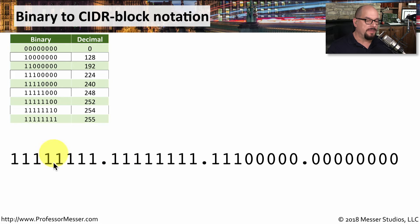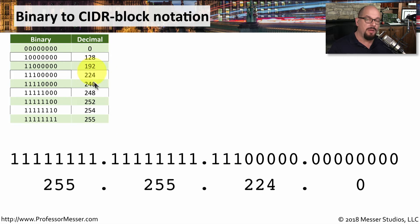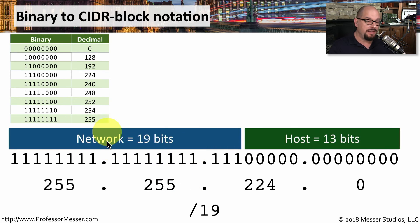Let's use our chart to perform the same calculation with this subnet mask. In binary, it's all ones in the first octet, all ones in the second octet, and three ones in the third octet. We know that all ones is going to be 255, and three ones with the rest zero would be 224, making the subnet mask 255.255.224.0. Adding up the number of ones, there are 19, giving us slash 19 — 19 bits for the network and 13 bits for hosts on each of those networks.